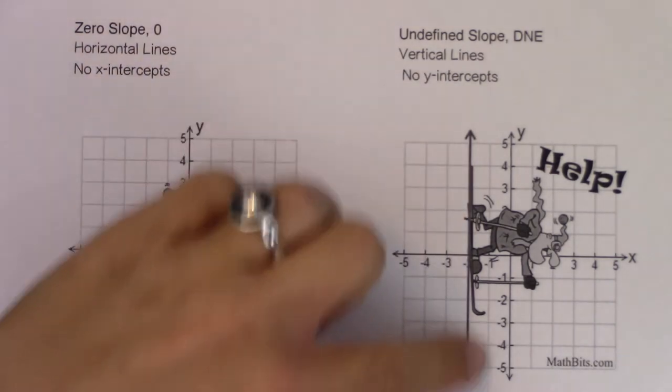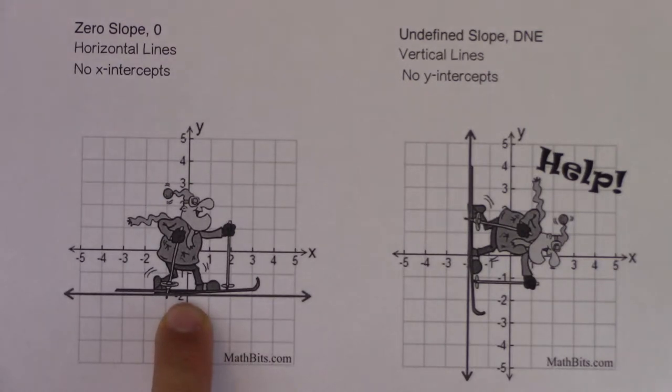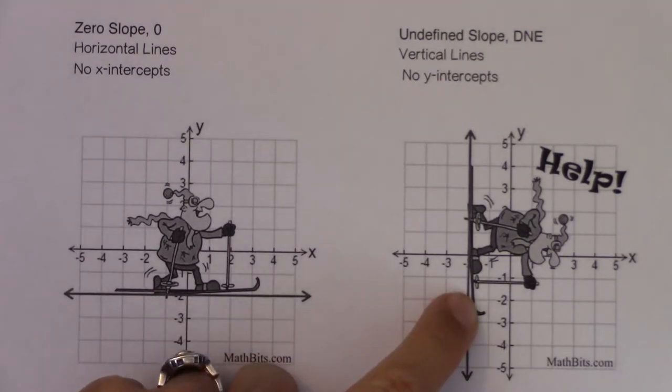So horizontal, vertical, right? We just did y equals 2 and x equals 5. These are slightly different. This is the line y equals negative 2, and this is the line x equals negative 2.